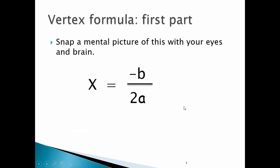Vertex formula is the first part. Snap a mental picture of this with your eyes and your brain. x equals negative b over 2a.